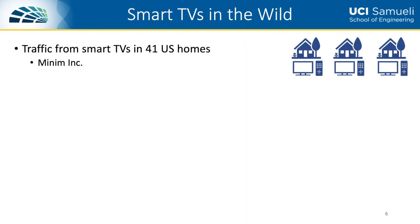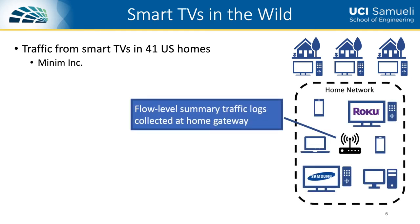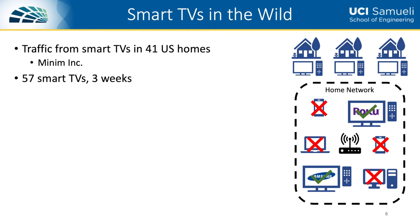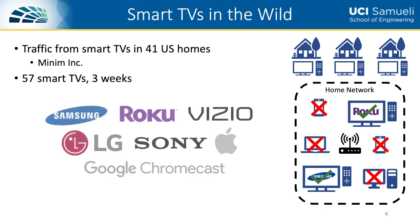Our in-the-wild dataset was collected from 41 US homes. This was done by Minim Inc., who generously provided us with this dataset. Minim collected flow-level summary logs at the home gateway, containing information such as the external endpoint of the flow and the traffic volume. We singled out the smart TV traffic and analyzed only that, leaving us with 57 smart TVs and traffic over a three-week window. Our dataset contains traffic from smart TVs spanning seven different platforms.